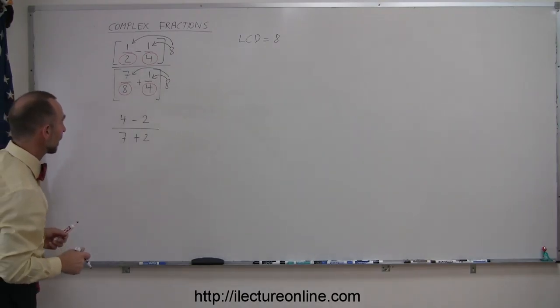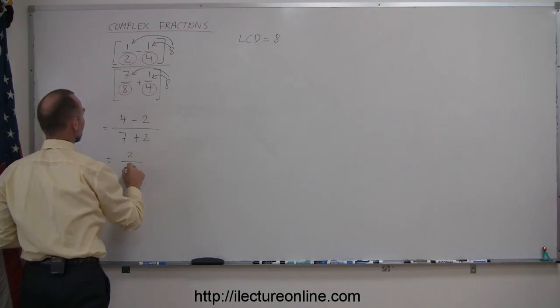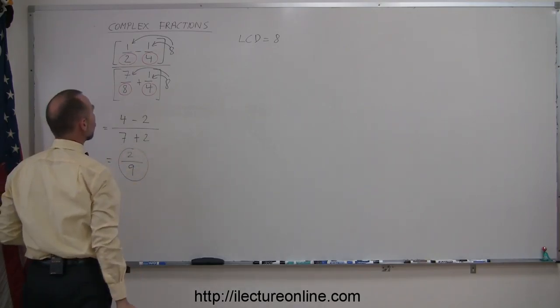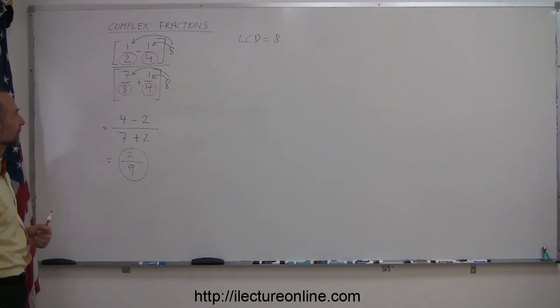And now we just have to combine terms, so this is equal to 4 minus 2, which is 2, and 7 plus 2, which is 9, and the answer is 2 ninths. Okay, so let's do a few more examples like this.